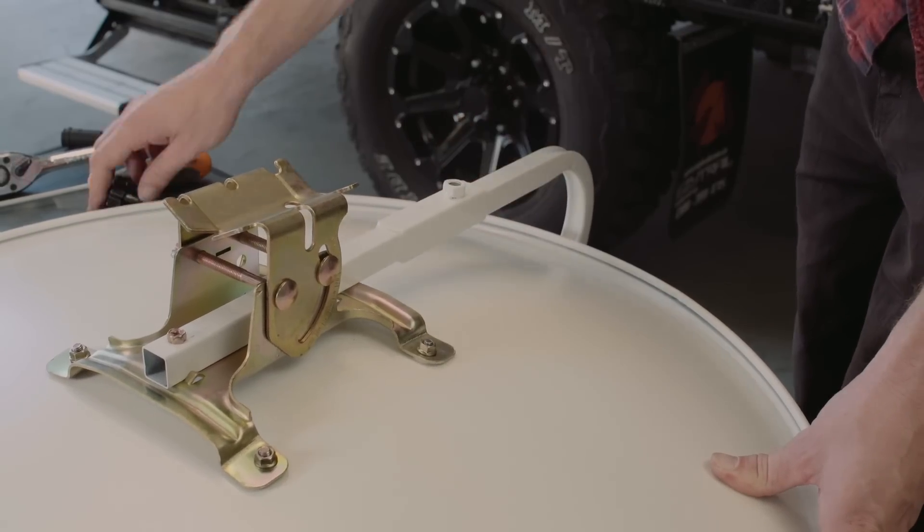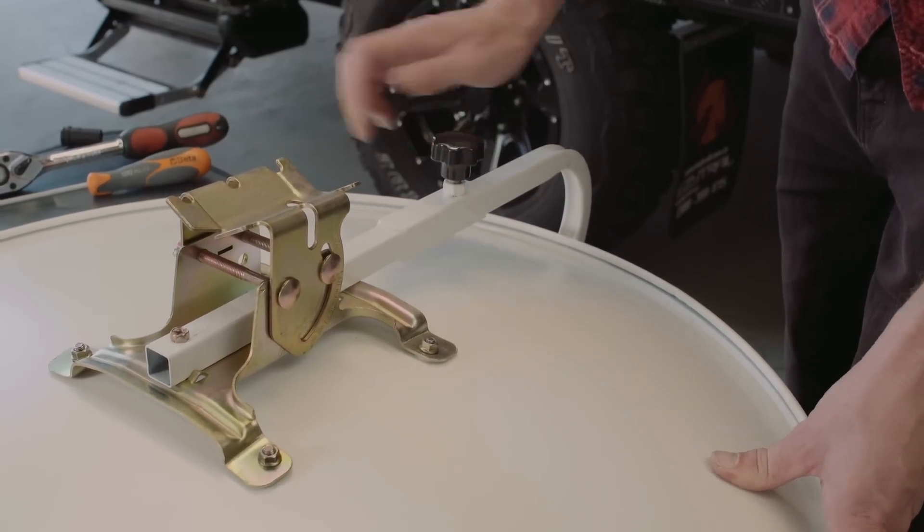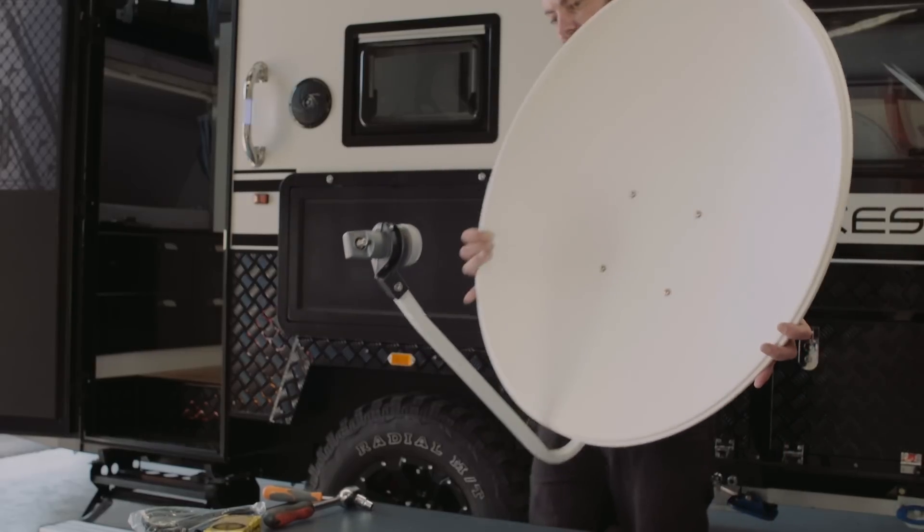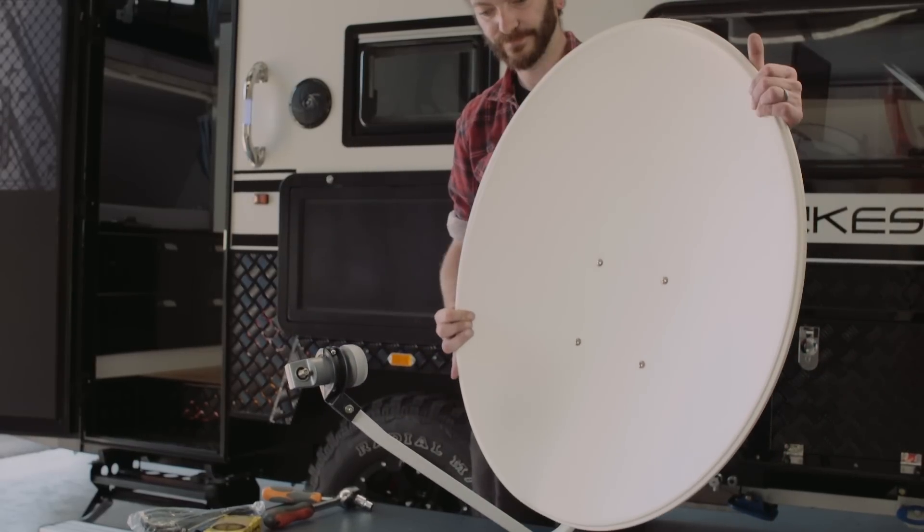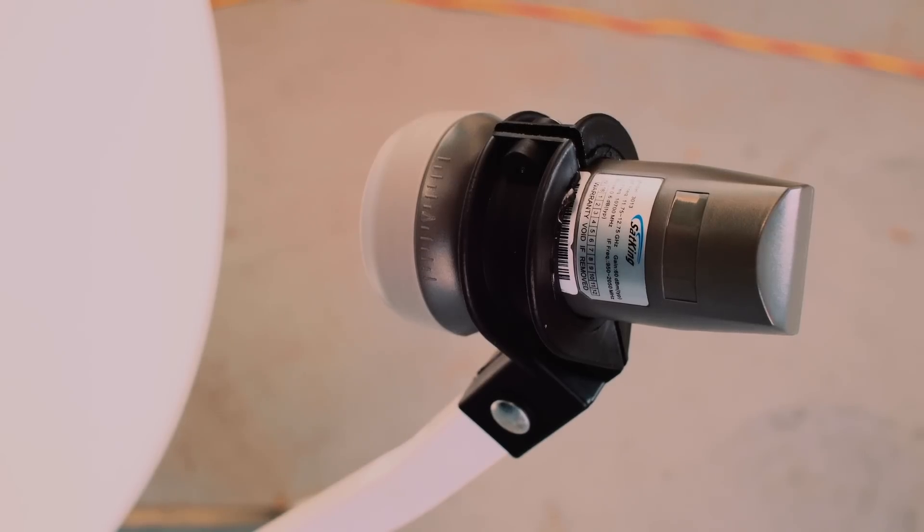Slide the final LNB arm into place. The dish is now assembled. LNB location is important to set right. Check out the instruction manual on how to set it up in your location.